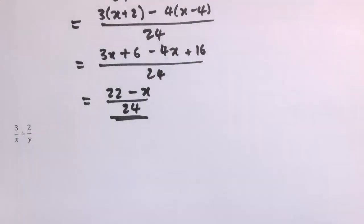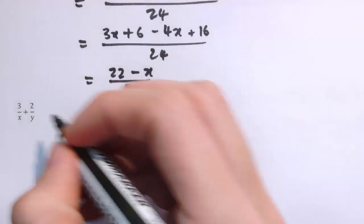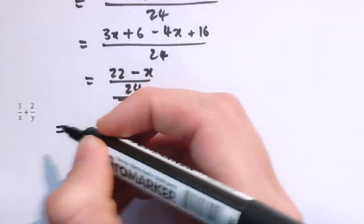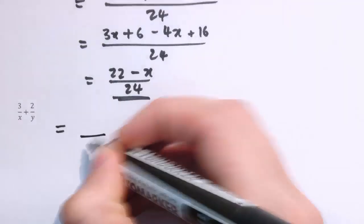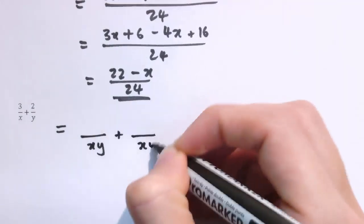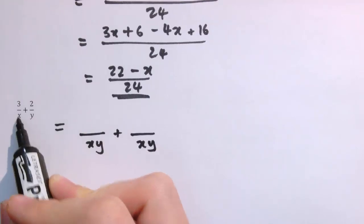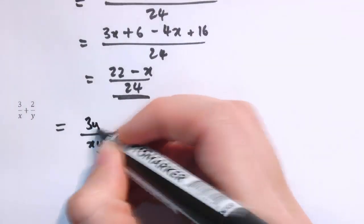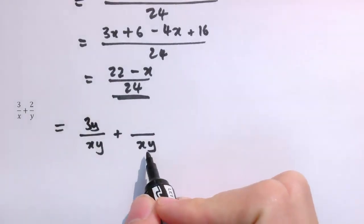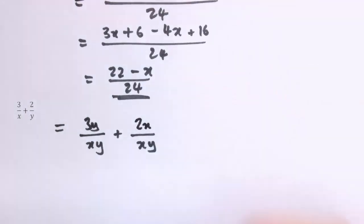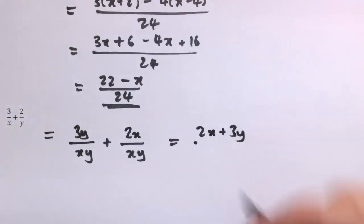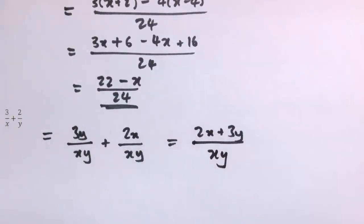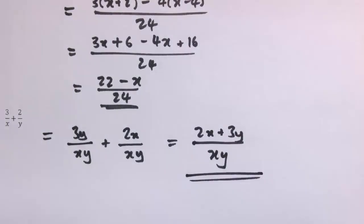Now some examples where there are algebraic terms in the denominator as well. With x and y in the denominators, the common denominator has to be x times y. We multiply the numerator of the first fraction by y to get 3y, and the numerator of the second by x to get 2x, giving 2x plus 3y all divided by x times y. By convention we write terms in alphabetical order, but it makes no mathematical difference.